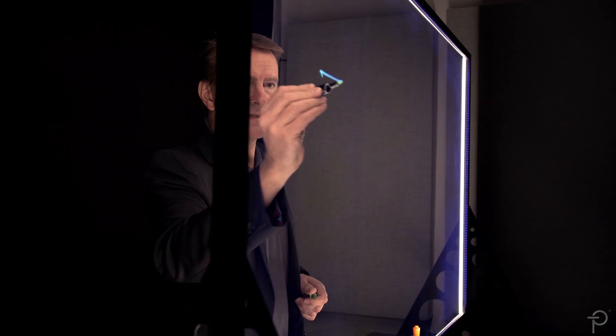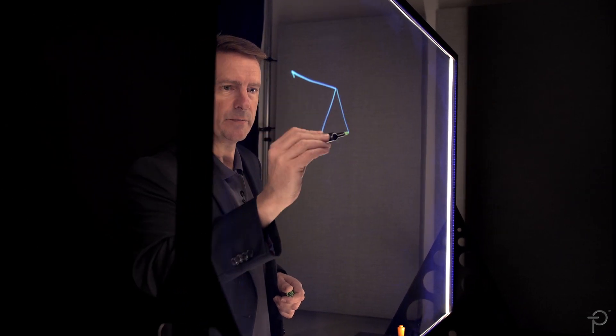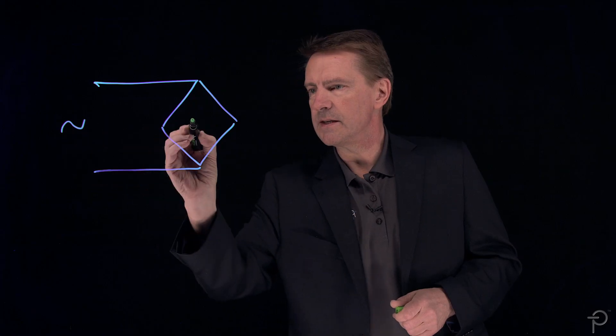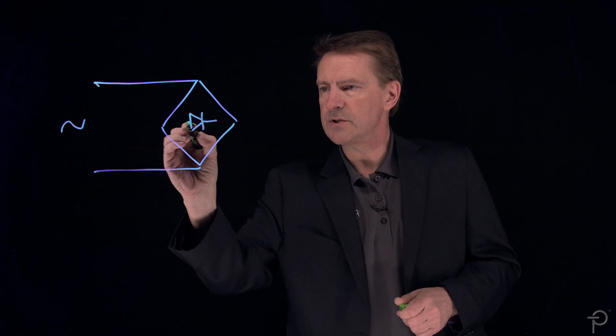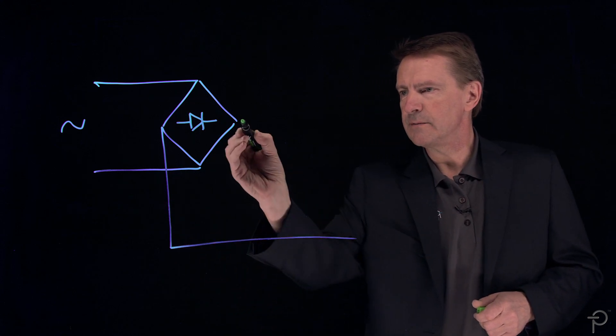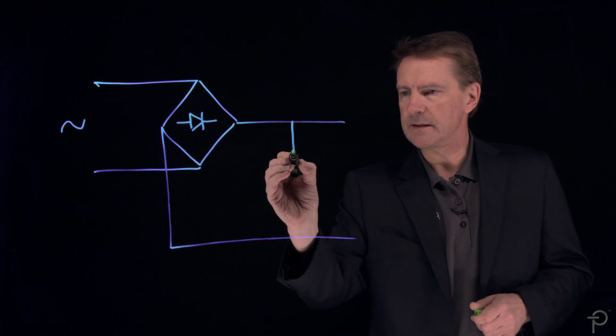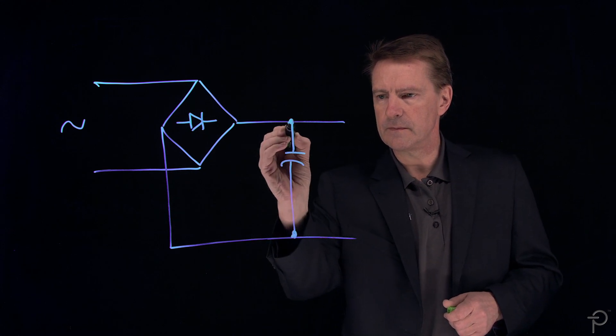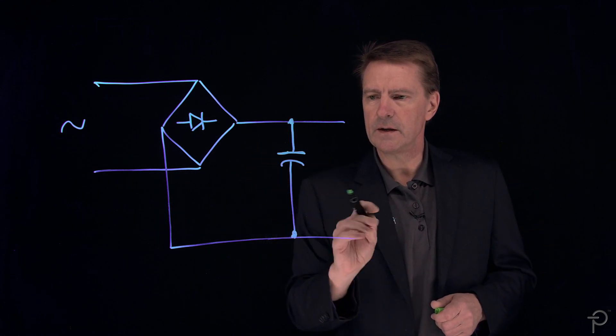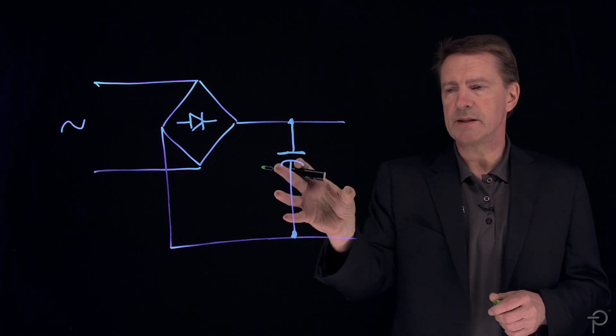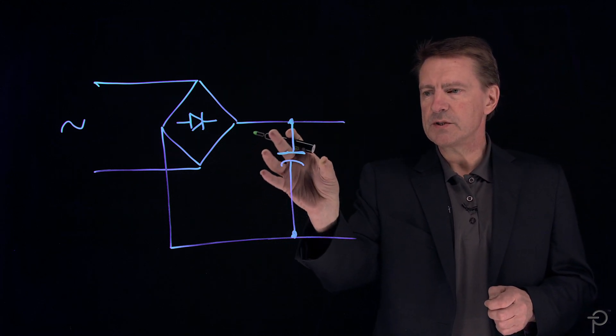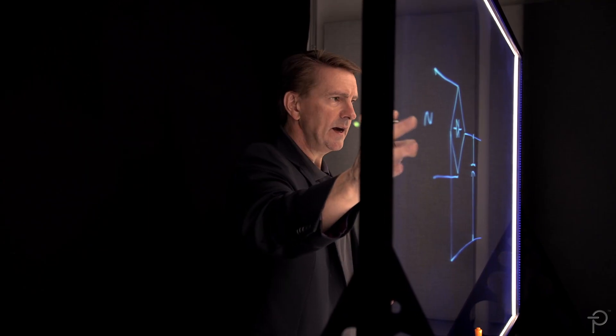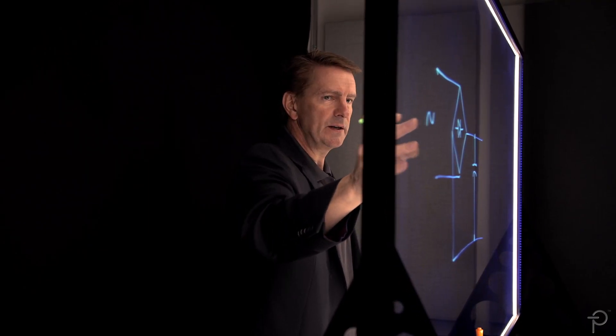If I draw the input stage of a typical power supply, the AC here, a bridge rectifier, and the very first main component after that is what's called the bulk capacitor. And the bulk capacitor is the energy storage element at the input of the power supply, which filters and reduces the ripple from the AC coming through on the input side.